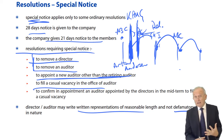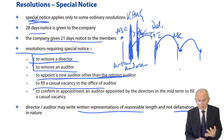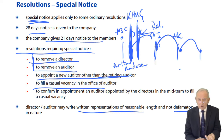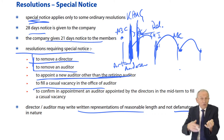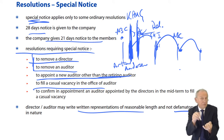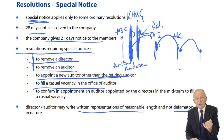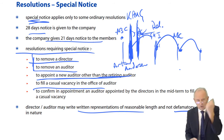So the five resolutions are: remove a director, remove an auditor, appoint as auditor someone other than the retiring auditor, appoint auditors to fill a casual vacancy, or confirm the appointment of an auditor made by the directors in the midterm to fill a casual vacancy — that auditor now submits themselves for re-election by ordinary resolution with special notice.